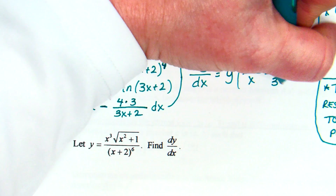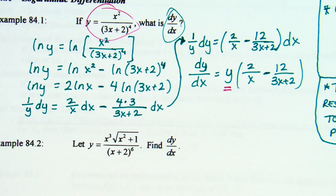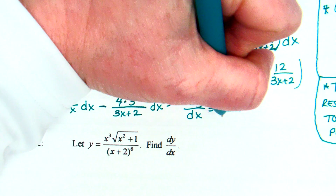Final step: this is dy/dx, which means our answer should all be in terms of x. What do we know about y? Y was the original problem — y equals that fraction. So we replace y with x squared over (3x+2) to the fourth. That's our answer. We leave that as is: x squared over (3x+2) to the fourth, times (2/x minus 12/(3x+2)).